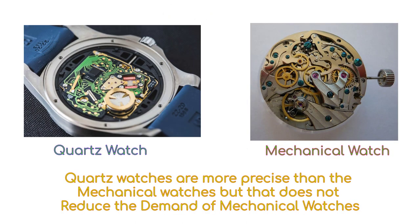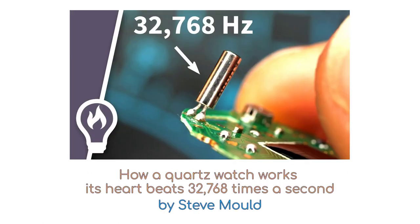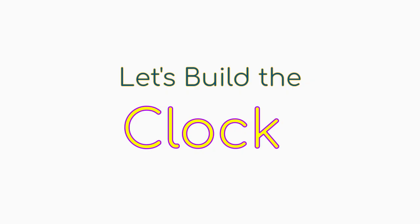It is also very precise in comparison to a mechanical clock which can lose 5 seconds a day, whereas a normal quartz watch loses 5 seconds in a month. I highly recommend watching this wonderful video by Steve Mould on how a quartz watch works. Check out the links in the description box below for further knowledge. Let's build the clock now, shall we?